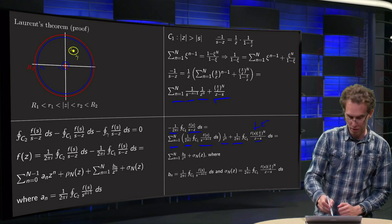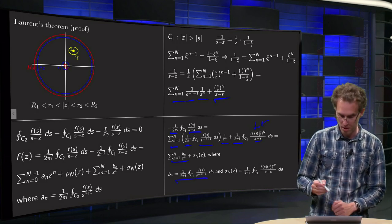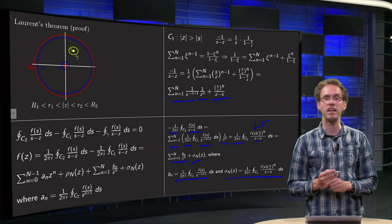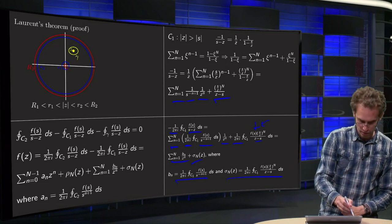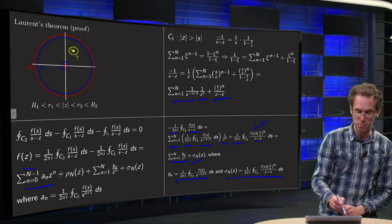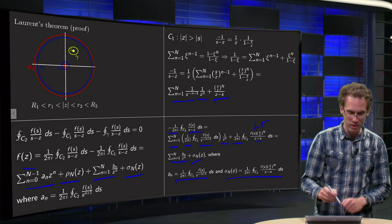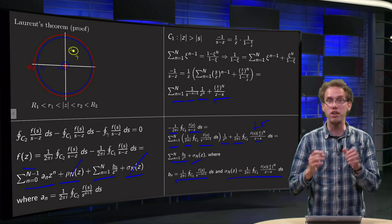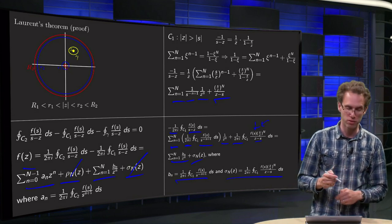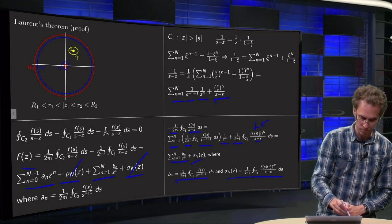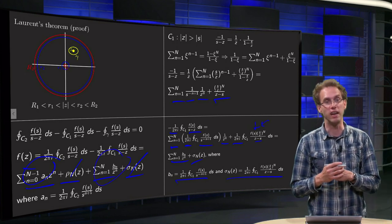And that's exactly of the form bn/z^n, where the bn coefficients have this form, plus some remainder term, which is exactly what we needed to show. Because now you have that your function consists of two parts: an analytic part plus a remainder, plus a principal part plus a remainder, where you can show that those remainders go to zero if capital N goes to infinity. Which means that if you take limits N to infinity, your f(z) consists of the part with the positive powers and the part with the negative powers.